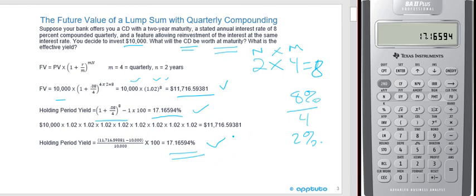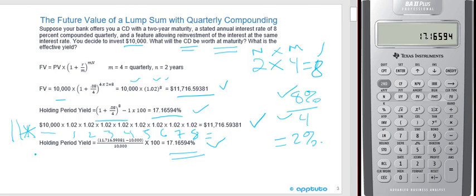If you really dislike algebra and forgot your calculator and just have your phone, it's only eight periods. You started with $10,000, the interest rate is 8% quarterly — 2% per period — for eight periods. You could do 10,000 times 1.02, eight times consecutively, and you'd get the exact same number. That's the way I sometimes teach it to non-algebra, non-calculator people. It's easy: just 10,000 times 1.02 eight times and you get the same answer.